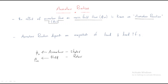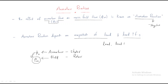The armature flux will affect the main field flux, and this effect is known as armature reaction. The word 'reaction' implies a negative effect — the flux is affected adversely. Armature reaction depends on two things: the magnitude of the load and the load power factor. These two factors are very important in the case of armature reaction.